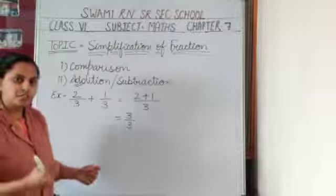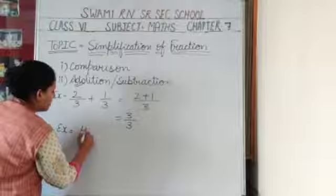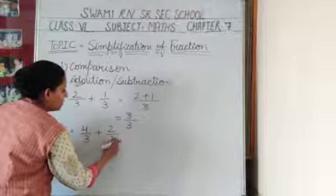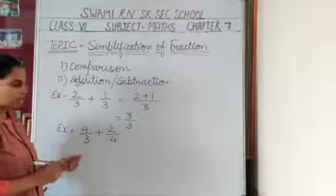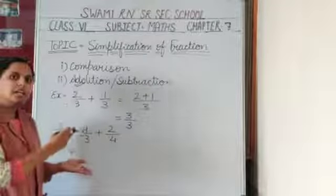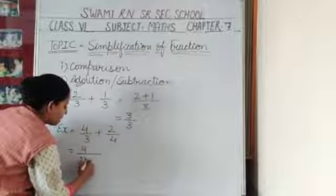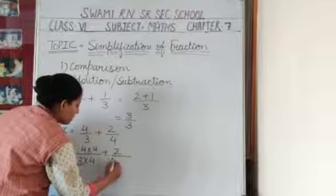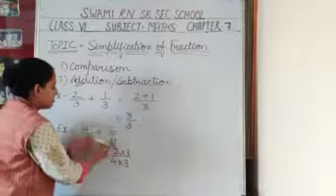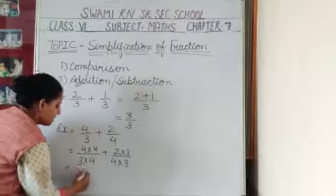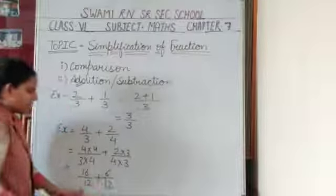If we have unlike fractions — meaning denominators are different — I write another example: 4 upon 3 plus 2 upon 4. For unlike fractions, first we make like fractions by cross multiplication. 4 upon 3 is multiplied by 4, and 2 upon 4 is multiplied by 3. The first number is multiplied by the second denominator and the second number is multiplied by the first denominator. So 4 × 4 = 16, 3 × 4 = 12, and 2 × 3 = 6, 4 × 3 = 12. Now the denominators are the same.